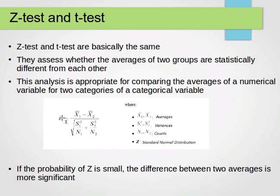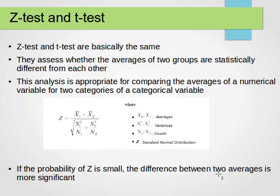The z-statistic is computed as: z equals x̄₁ minus x̄₂ over the square root of s₁² over n₁ plus s₂² over n₂. Here x̄₁ and x̄₂ are the averages of the two groups, s₁² and s₂² are the variances, and n₁ and n₂ are the counts or number of values. The z-statistic assumes a standard normal distribution. If the probability of z is small, the difference between the two averages is more significant — so we are looking for a small probability.